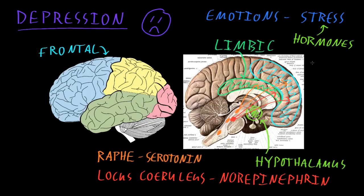Then there's a pathway that starts with an area called the ventral tegmental area, or VTA for short, located in the brainstem, which also sends long axons up to different areas of the cerebrum. The ventral tegmental area supplies much of the dopamine to the brain. These neurotransmitter systems affect function in many parts of the brain, including the frontal lobes and limbic structures. Supporting the idea that abnormalities of these systems are involved in major depressive disorder is the fact that medications affecting these different neurotransmitters — dopamine, norepinephrine, and serotonin — often improve the symptoms of major depressive disorder.